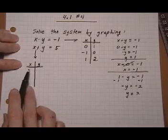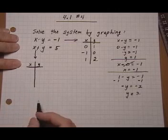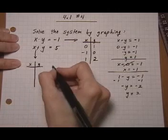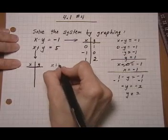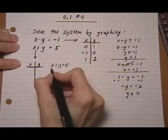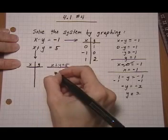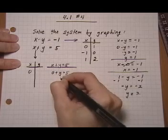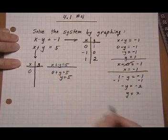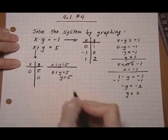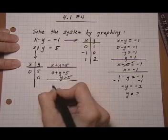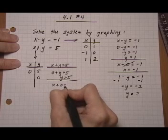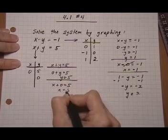Before we graph that one, let's go ahead and get our three points for the other equation. So for x plus y equals five, let's go ahead and put in x is zero, and that gives us y is five. Let's put in y is zero. If y is zero, I get x plus zero equals five, so now x is five.